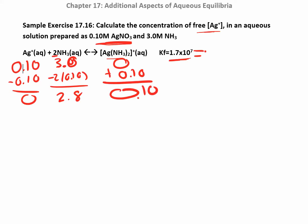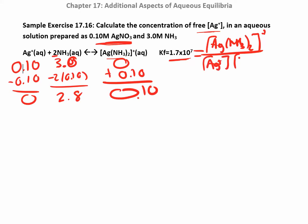I can write the Kf expression since they're giving me Kf. It's products over reactants: the complex ion over silver times NH₃ squared. At this point, you might notice there's no variable to solve for yet — that comes in the next step with the second ICE table.